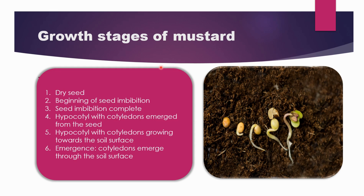The first growth stage is the germination stage. Here you can see that the dry seeds have been germinated. After imbibition — the first step in germination — the dry seed undergoes imbibition, and after seed imbibition is completed, we can see the hypocotyl with the cotyledons emerge from the seed and grow towards the soil surface, and the cotyledons emerge through the soil surface.